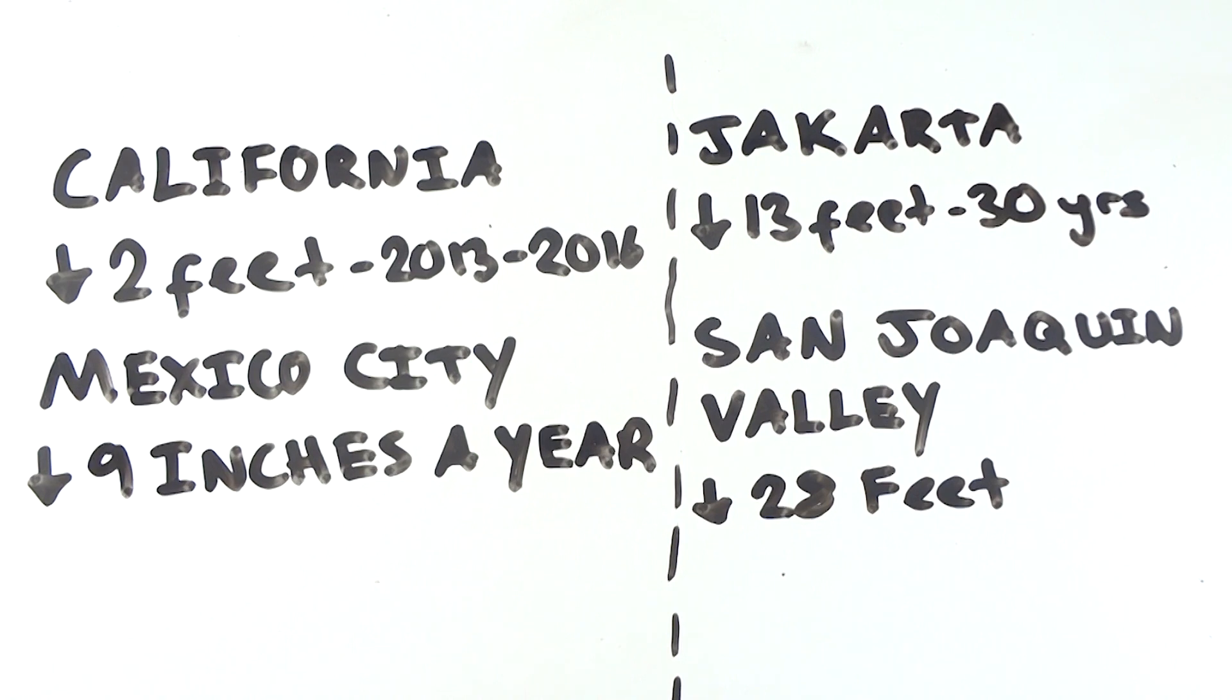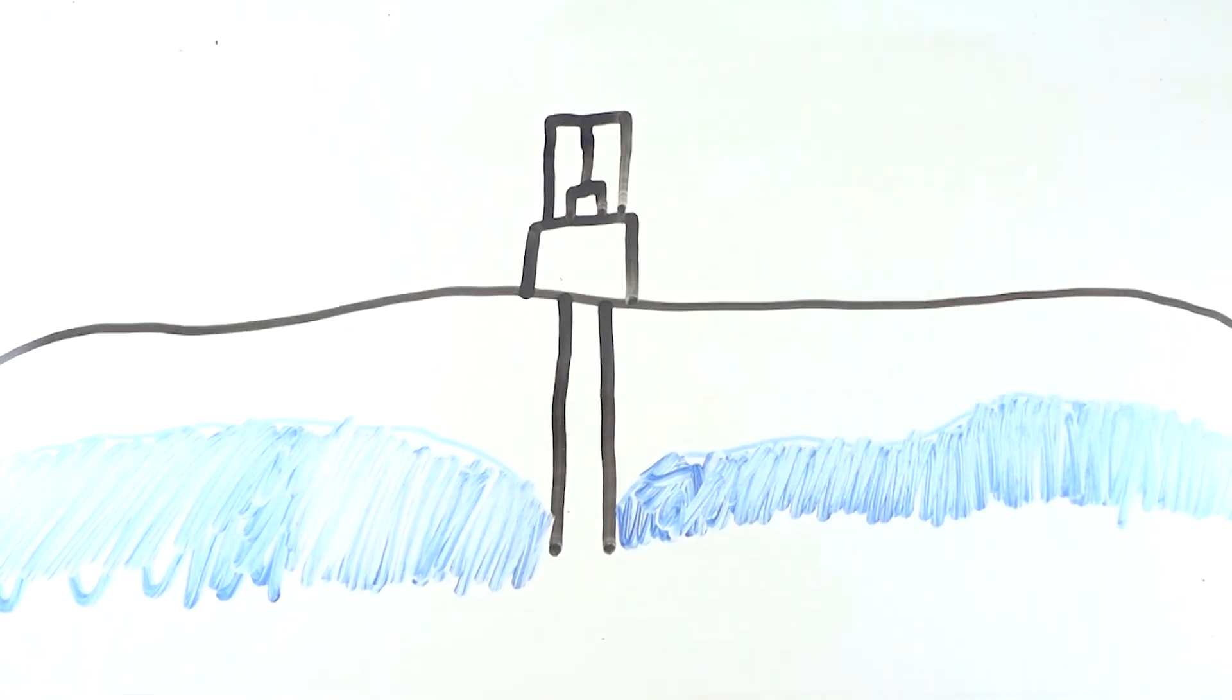So what is going on in all these places across the world, and why are cities such as Beijing sinking down into the ground? It all has to do with water and land subsidence.